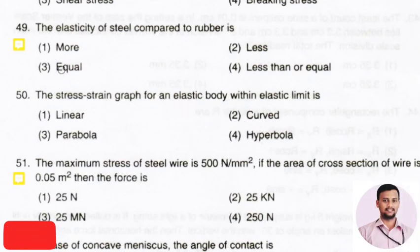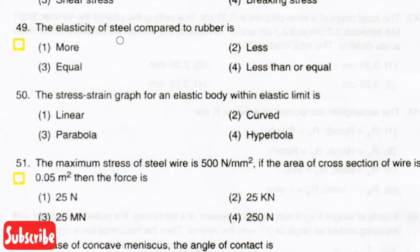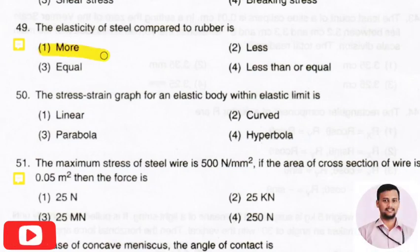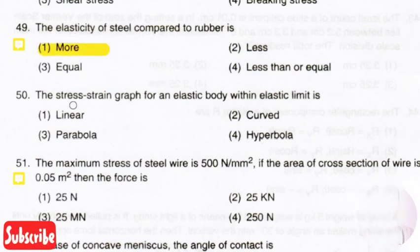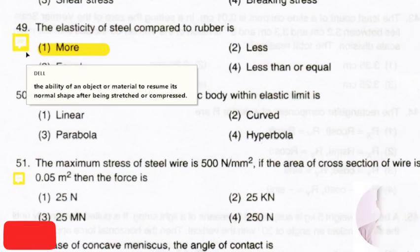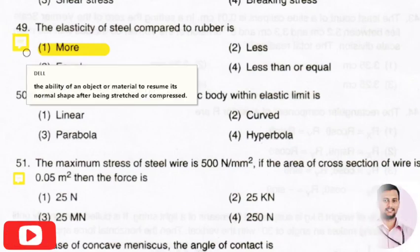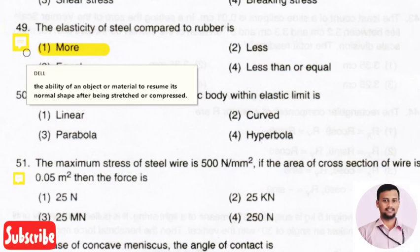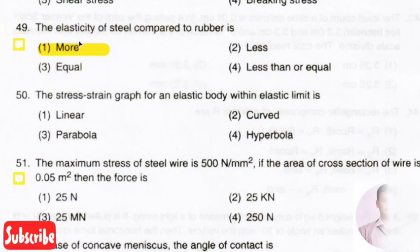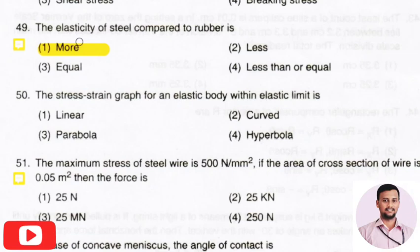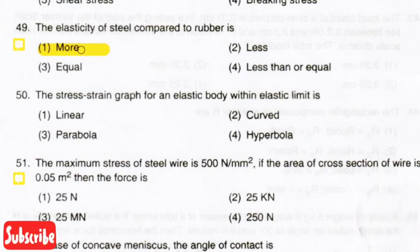The next question: the elasticity of steel compared to rubber is? The right answer is more. Elasticity is the ability of a material to resume its normal shape after being stretched or compressed. For steel, the elasticity is much higher than for rubber.